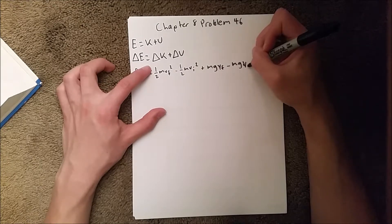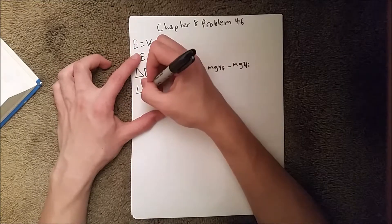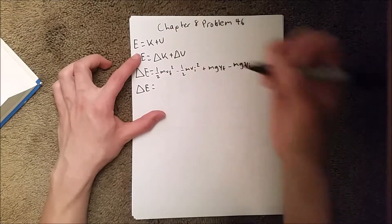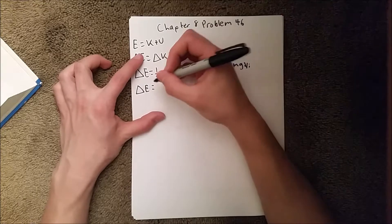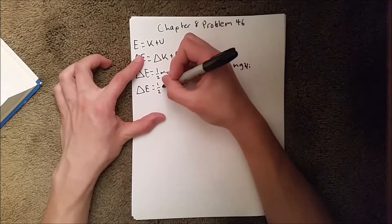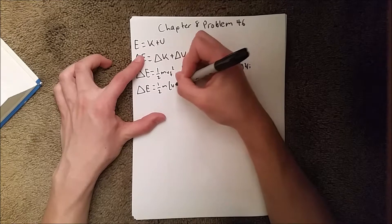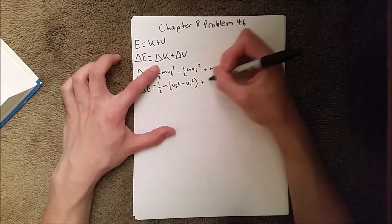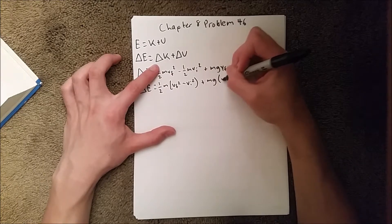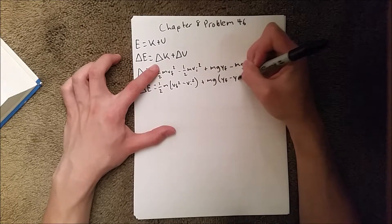We can simplify that a little bit by taking out the one half and the m here, and the mg here. We get one half m times v final squared minus v initial squared, plus mg times y final minus y initial.